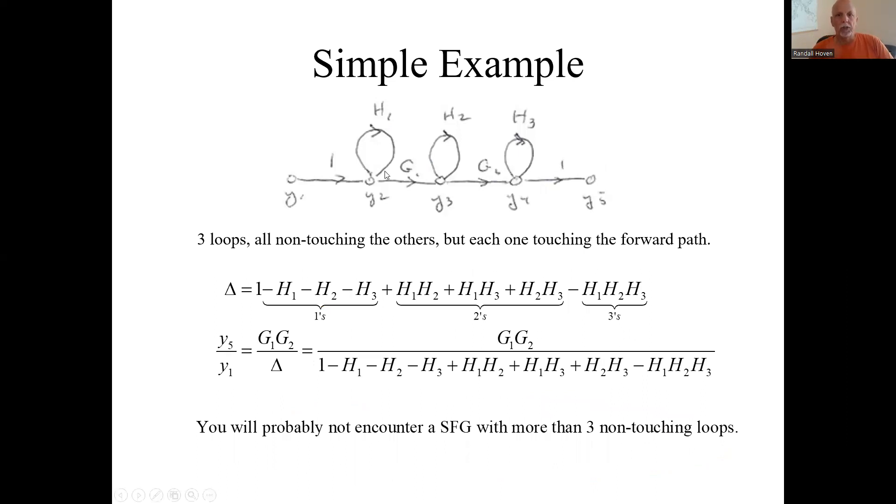So to give a little bit more, here's a sort of contrived signal flow graph. It has these three simple loops, and their gains are just H1, H2, H3, but none of them touch each other. So when I do that overall determinant, I got one minus individual loop gains H1 plus H2 plus H3, but all minused, plus the sum of the pairs gain.